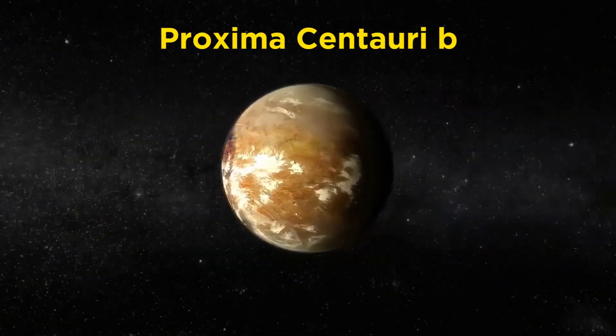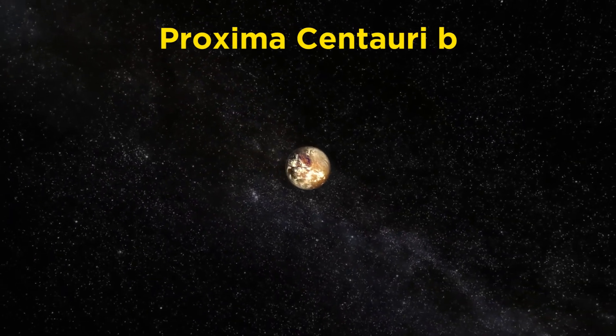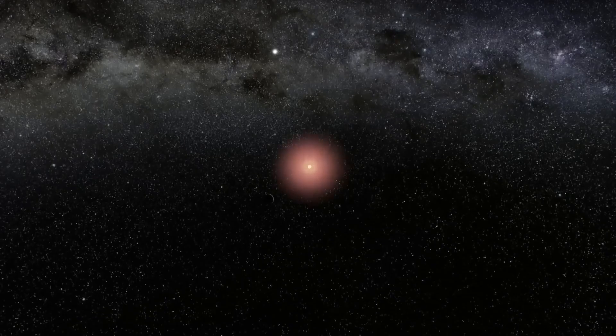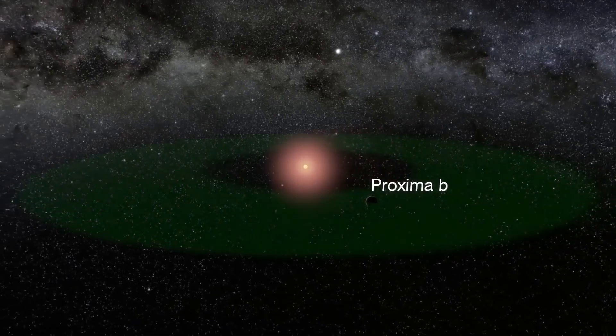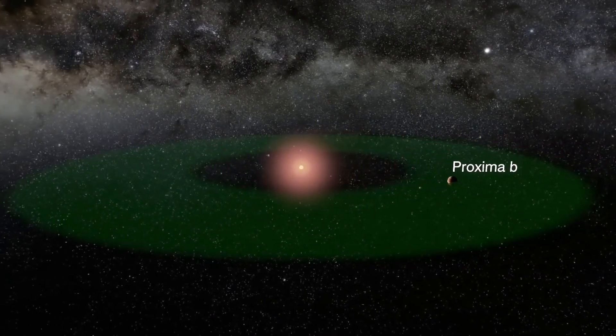At only four light years away, Proxima Centauri b is the closest known exoplanet neighbor to Earth. Scientists believe that this planet might be, to some certain extent, habitable to us.